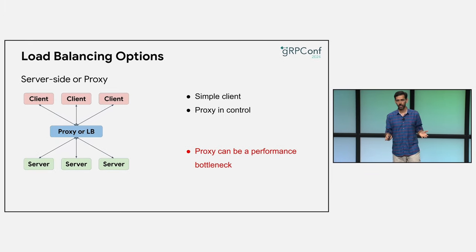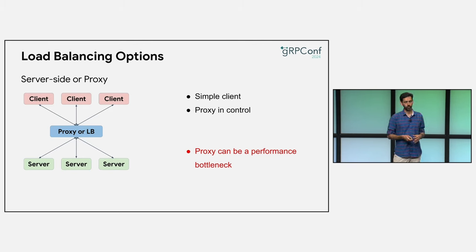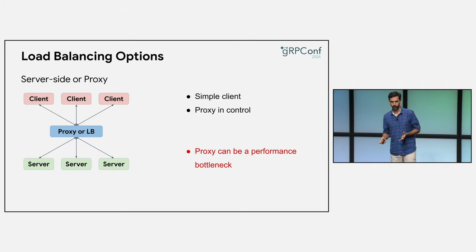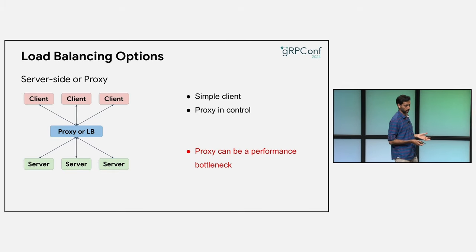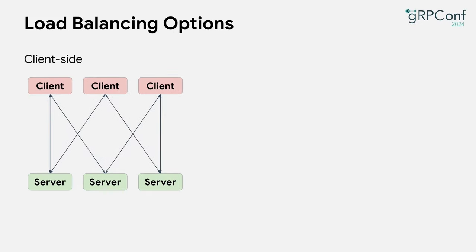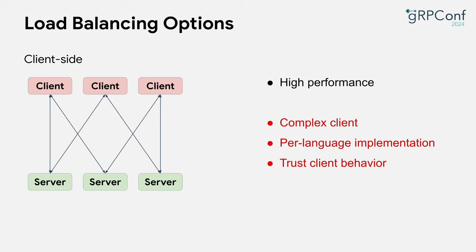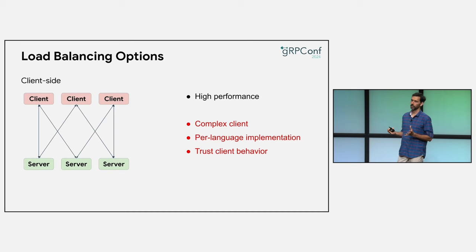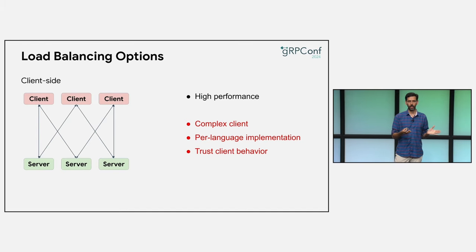As the service owner, you are running the proxy, so you have full control over the load balancing that happens in it. But the disadvantage is that the proxy is in the RPC path, so it can become a bottleneck, especially for services that require high throughput. With client-side load balancing, clients talk directly to the server, eliminating the proxy hop, which gives you better performance, but this comes with downsides. The load balancing logic is moved into the client, making for a thick and complex client.